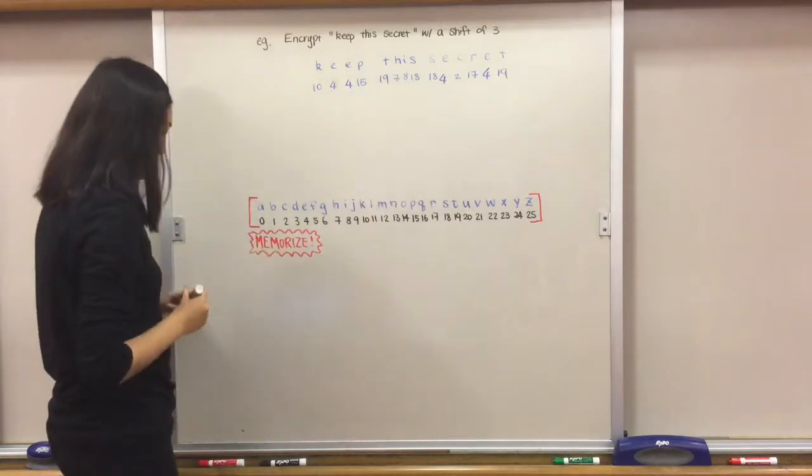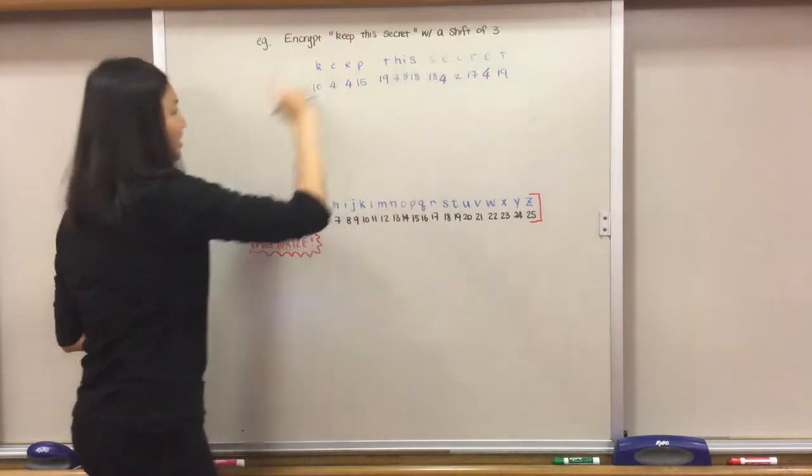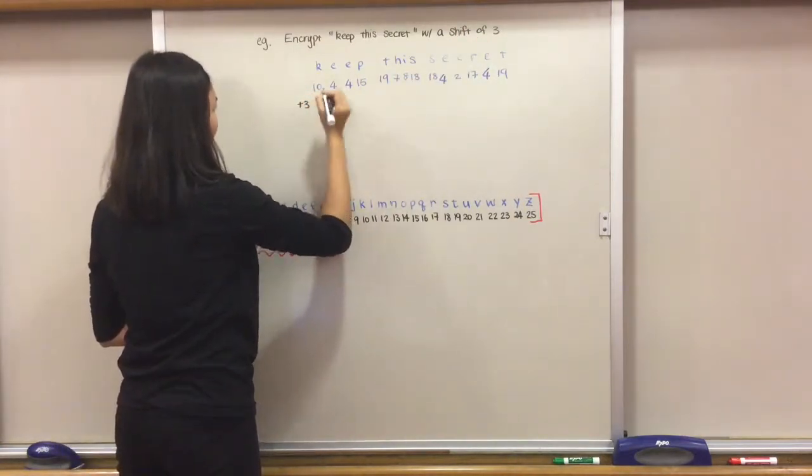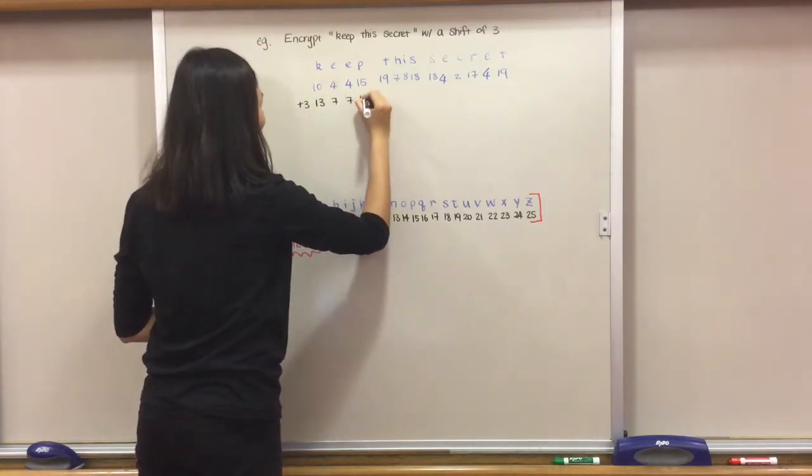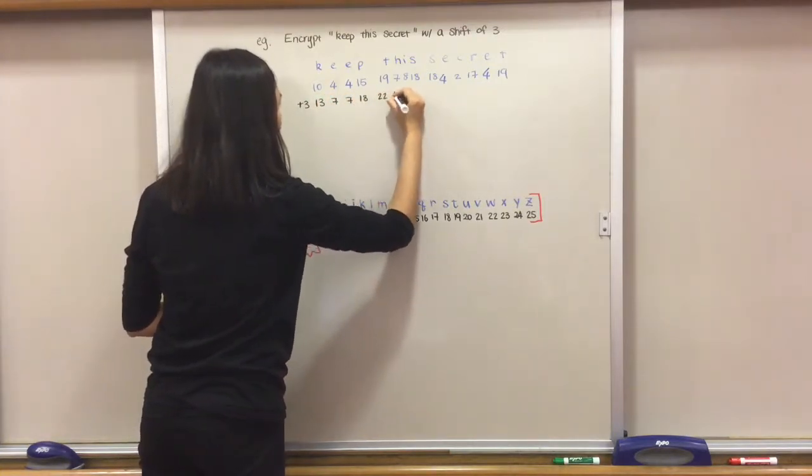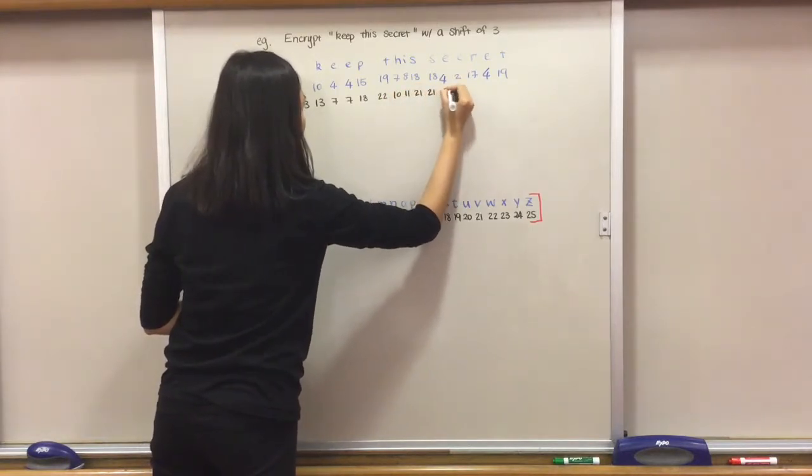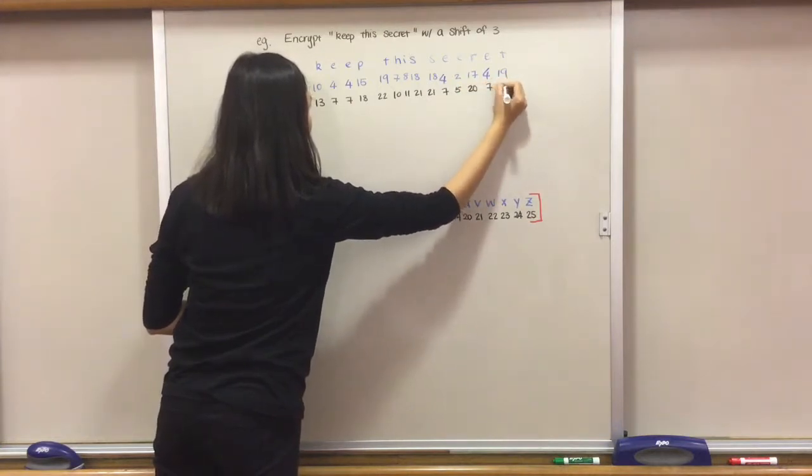Now what we're going to do is add 3 because this is a shift of 3 and we are encrypting. Simple math: 13, 7, 7, 22, 10, 11, 21, 21, 21, 7, 5, 20, 7, 22.